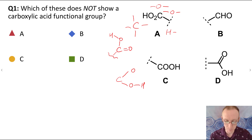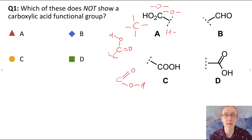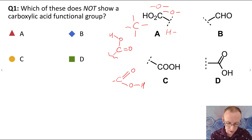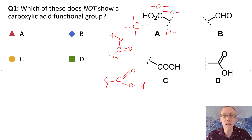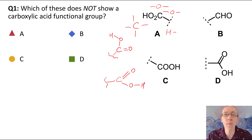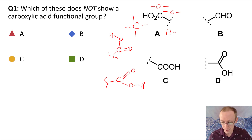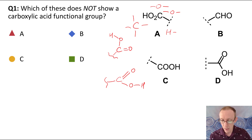So it makes sense that the hydrogen must be attached to one of the oxygens, and the valency of the carbon and the oxygen is satisfied by making that a double bond. So that must be the formula for C. If we look at D, it's already written out as a carboxylic acid, so if you can recognize that functional group, you can see that that is a carboxylic acid.